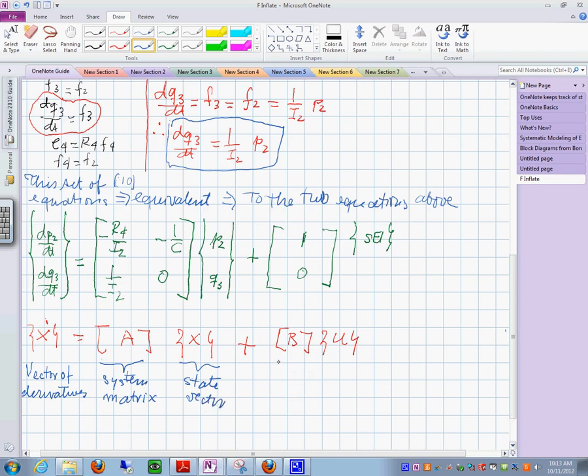This is called the state vector. This one doesn't have particular learning, but this is the vector of inputs.